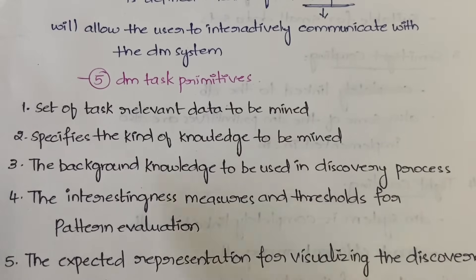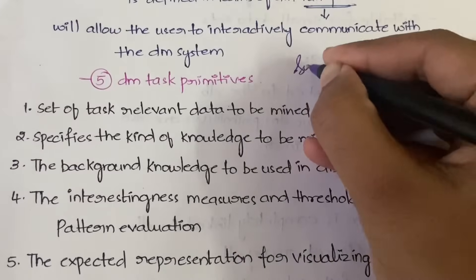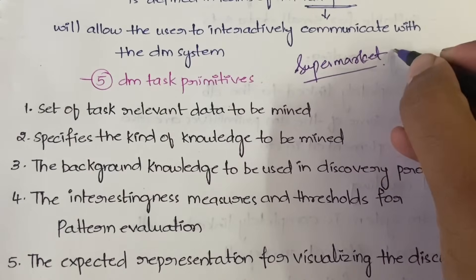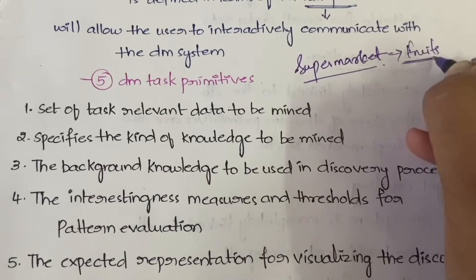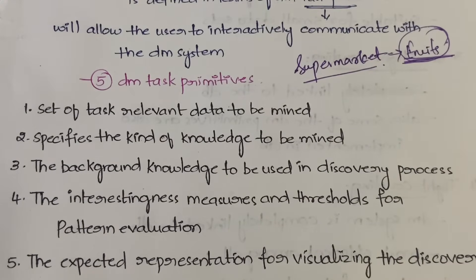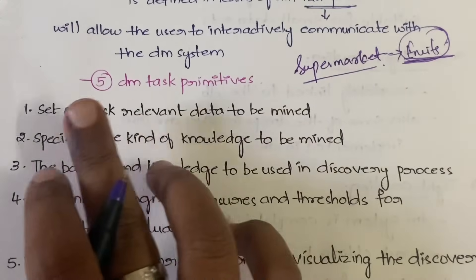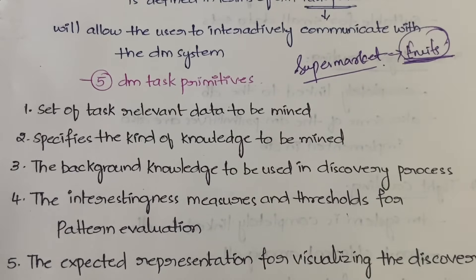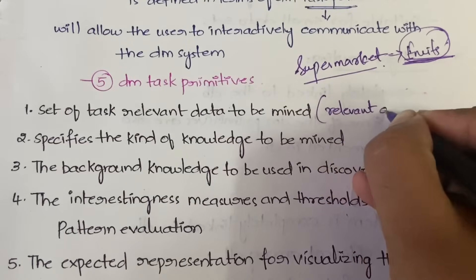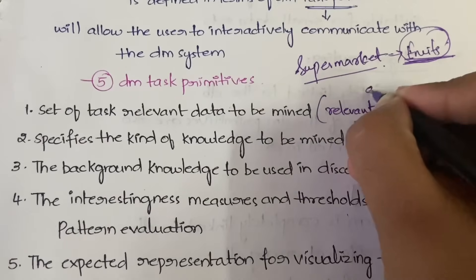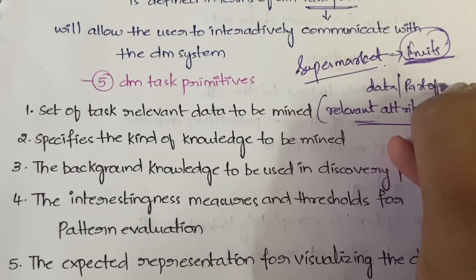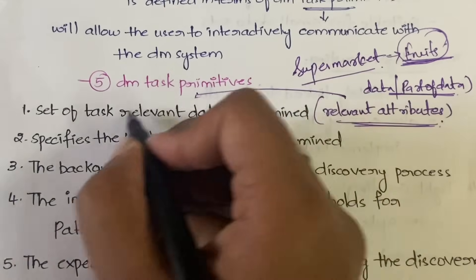The first primitive is the set of task relevant data to be mined. This will specify the portions of the data where the user is interested — what is the part of the data that the user actually needs. Going back to our supermarket example: in a supermarket, if you want to buy fruits, your area of interest is only fruits, not vegetables, pulses, stationery, or anything else. Similarly, the set of task relevant data specifies what the user is interested in, and this is also called relevant attributes — the data which is in the interest of the user.